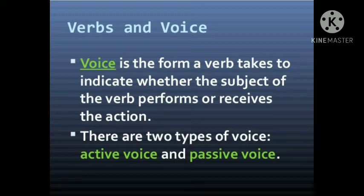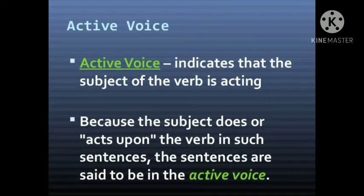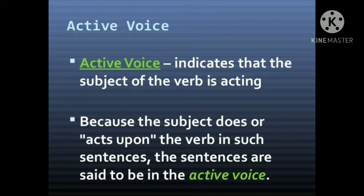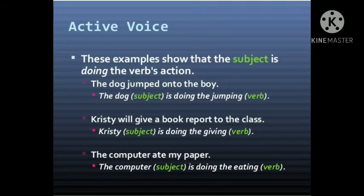There are two types of voices: active voice and passive voice. Let's start with active voice first. Active voice indicates that the subject of the verb is acting — meaning the subject of the verb is performing the action. The subject is doing the work. Because the subject does or acts upon the verb in such sentences, the sentences are said to be in active voice.